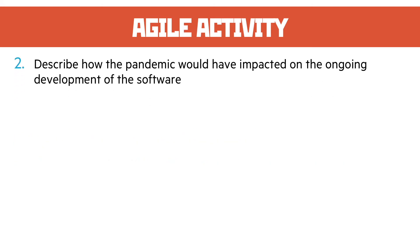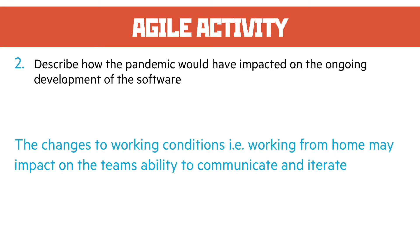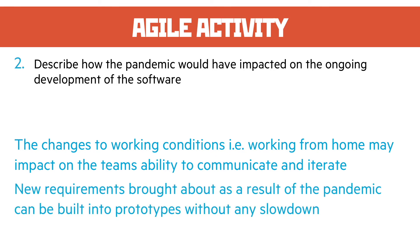Question two: describe how the pandemic would have impacted on the ongoing development of the software. The change to working conditions like working from home may make it more difficult for the team to communicate, and since agile is all about communication, working together, and iteration, that's going to be damaged. However, any new requirements brought about as a result of the pandemic can be built into the prototypes and the development cycle without any slowdown, so adding new features should be straightforward.